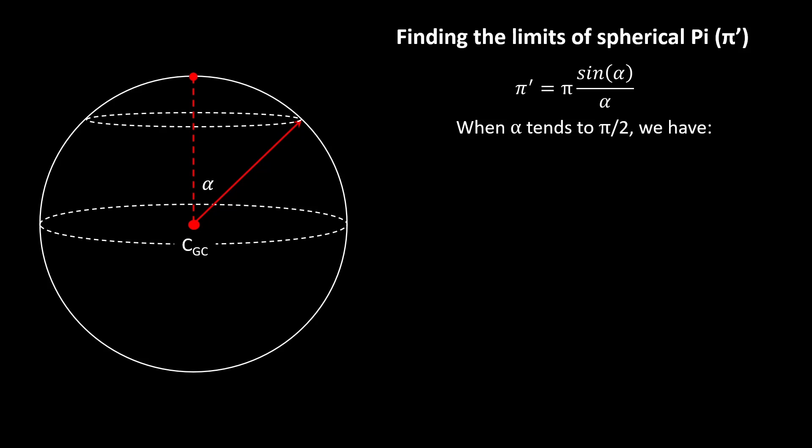The limit as α approaches π/2 is π sin(α)/α, which is the limit of π sin(π/2) divided by π/2. Since sin(π/2) is 1, it's π divided by π/2—in other words, the limit is just 2.